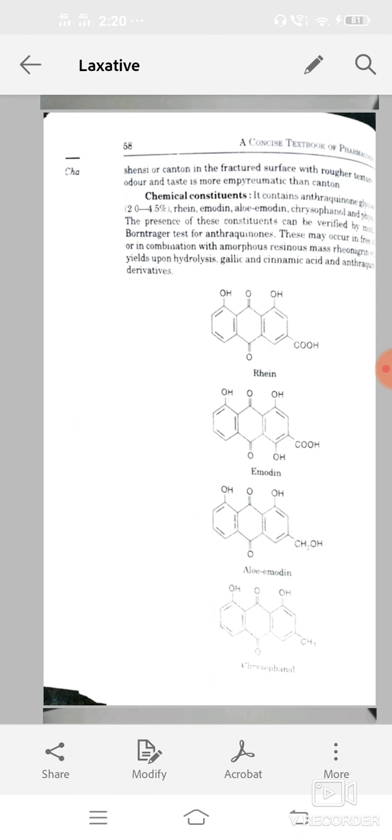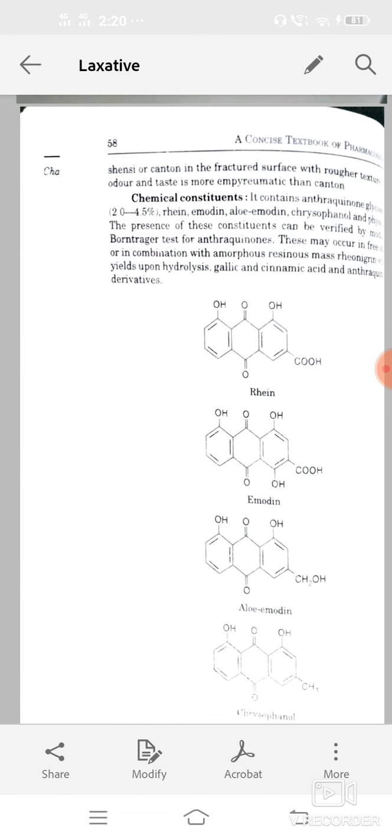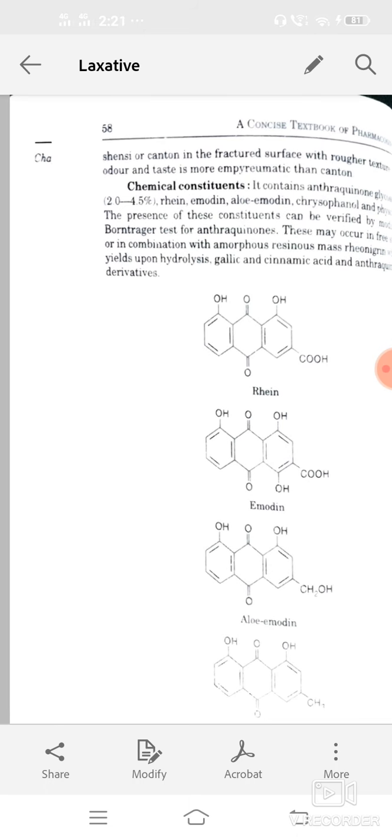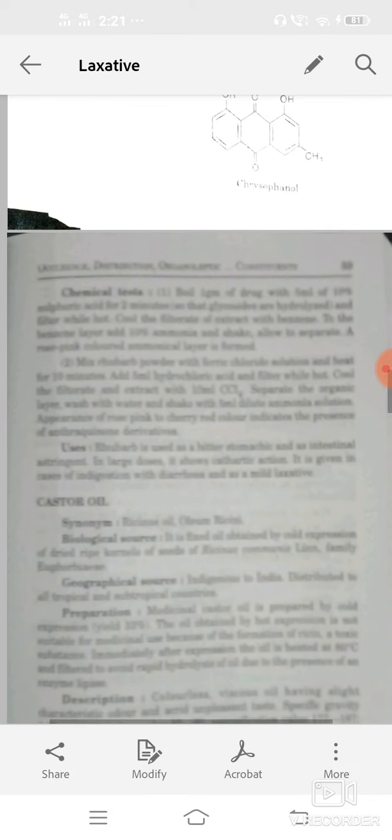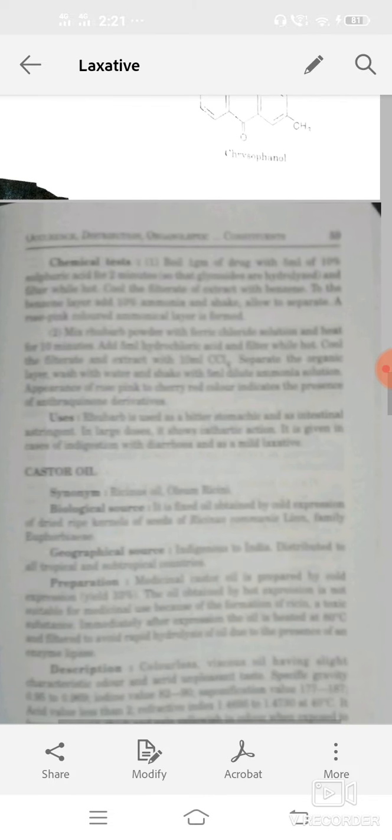Structures: rhein, emodin, aloe emodin, and chrysophenol. Chemical test: boil 1 gram of drug with 5 ml of 10% solution of sulfuric acid for 2 minutes and then filter. Then cool the filtrate.